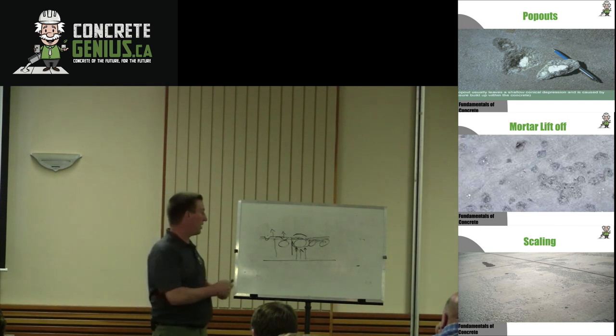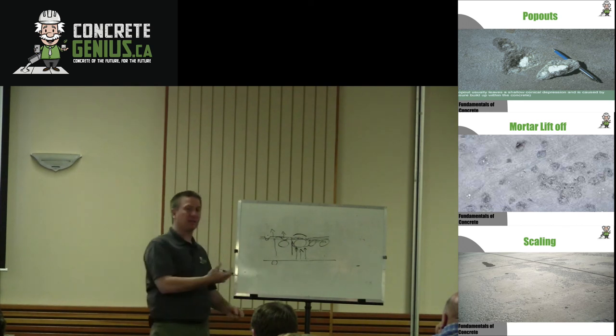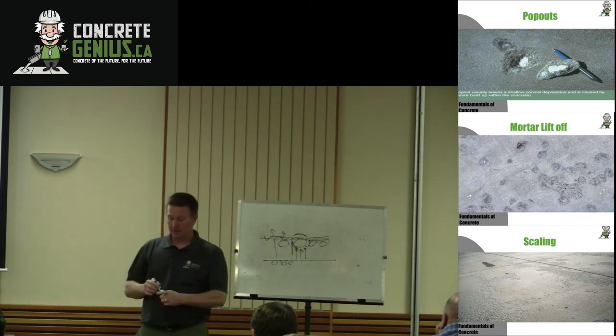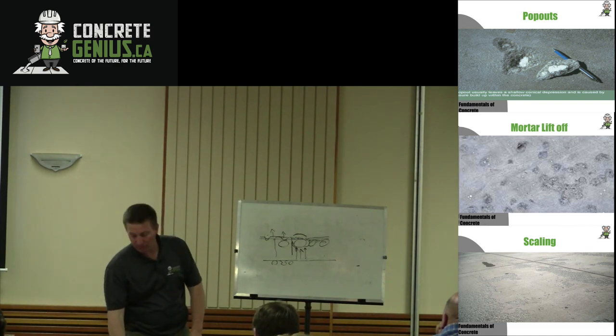It exaggerates that. So if we have a rock close to the surface, this is the surface again, we have a rock really close to the surface, we can see that rock, but it doesn't really look that bad. The deeper those rocks are on the surface, the deeper that mortar lift-off is, the more visible it becomes.